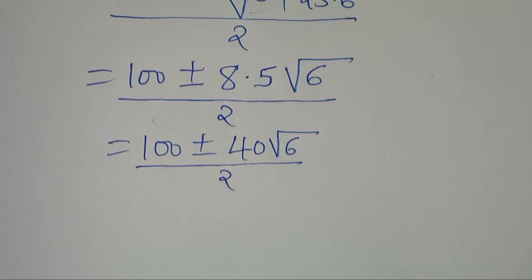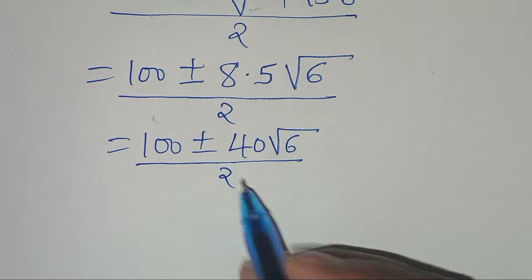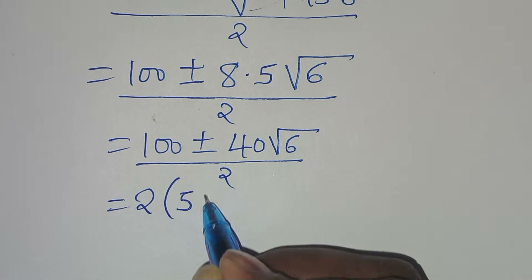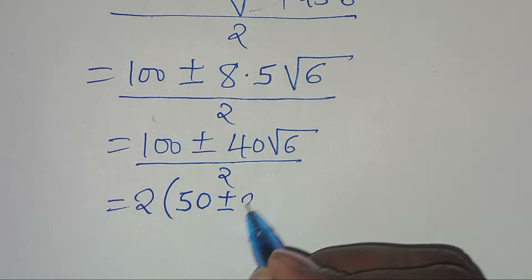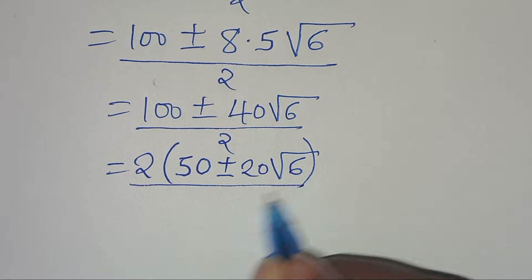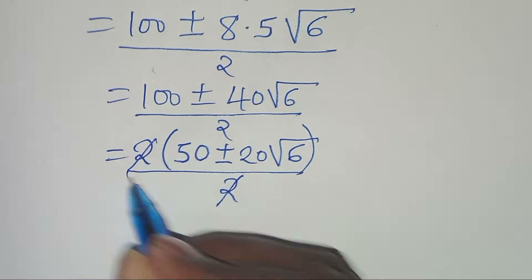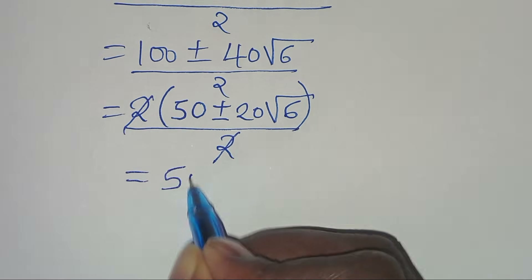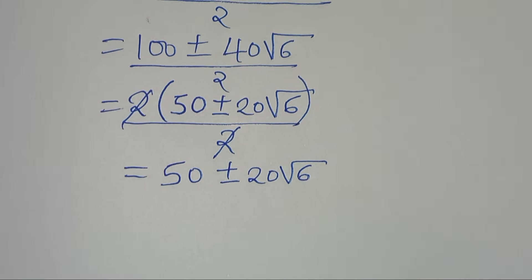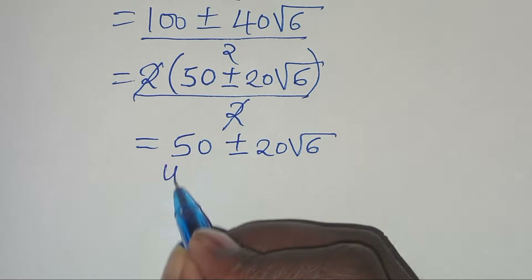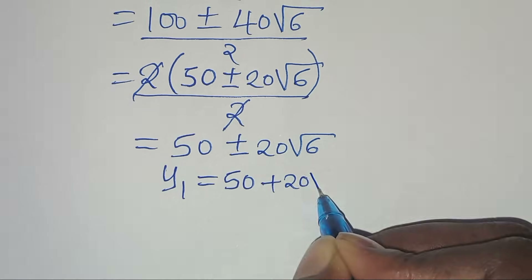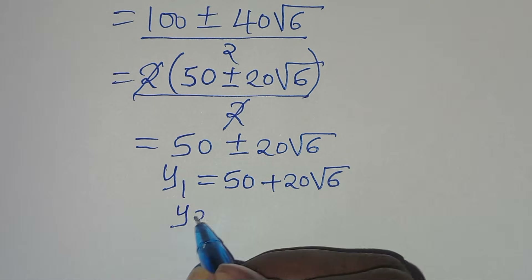In the numerator we can factor out 2, giving 2 times (50 plus or minus 20 square root of 6), divided by 2. This simplifies to 50 plus or minus 20 square root of 6. Therefore y1 equals 50 plus 20 square root of 6 and y2 equals 50 minus 20 square root of 6.